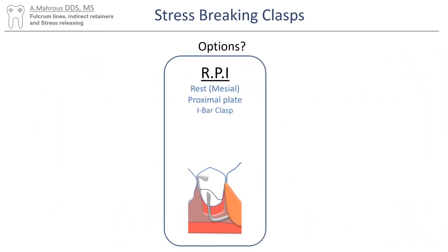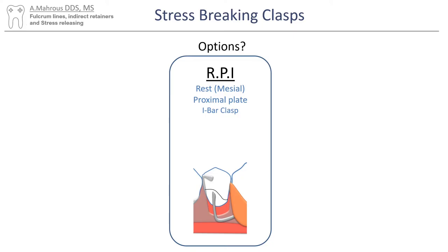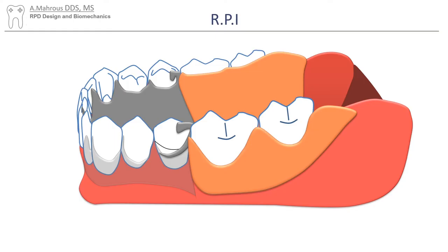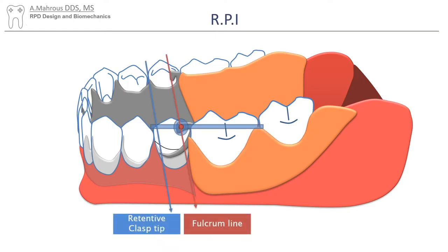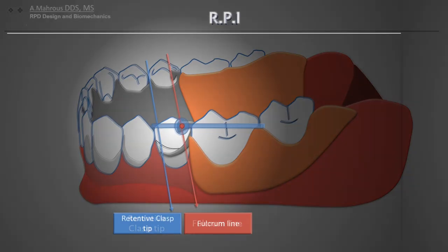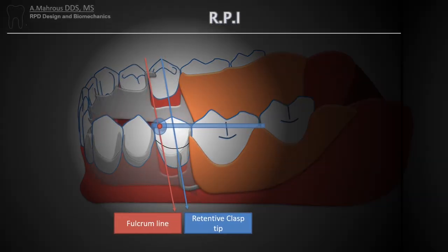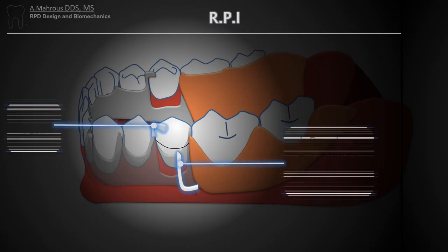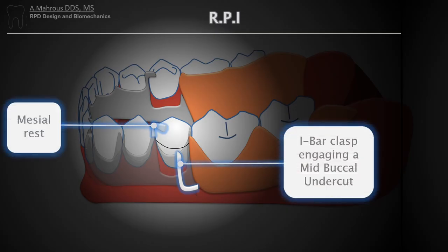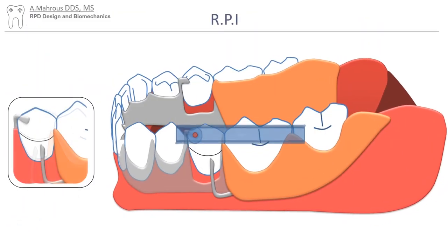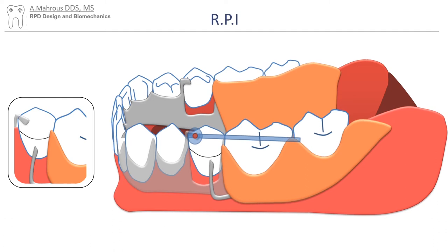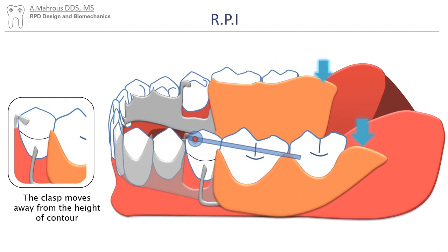Let's take the RPI clasp as an example. To understand how the RPI clasp can break stresses on the abutment, let's start with the configuration that causes the issue: a distal rest with a cast circumferential clasp. The RPI clasp uses a mesial rest in conjunction with an I-bar clasp. This moves the fulcrum line anteriorly so that the clasp tip and the edentulous base are posterior to the fulcrum line. So now when pressure is applied posteriorly, the clasp moves apically and away from the survey line, effectively disengaging the undercut and avoiding extraction forces being transferred to the abutment tooth.